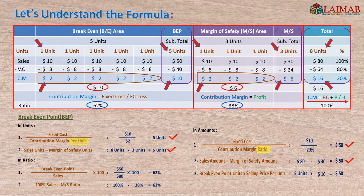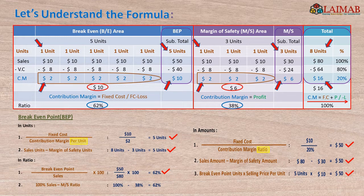Second formula for amount: sales amount $80 minus margin of safety amount $30 gives $50 breakeven point. Third: breakeven point 5 units multiplied by sales price per unit $10 also gives $50 breakeven point. To find the ratio: breakeven point sales $50 divided by sales amount $80 gives 62%. And second: 100% sales minus margin of safety ratio 38% also gives 62% breakeven point ratio.